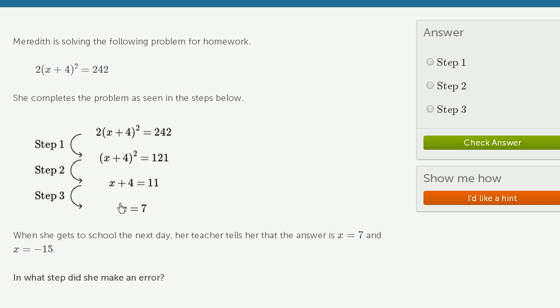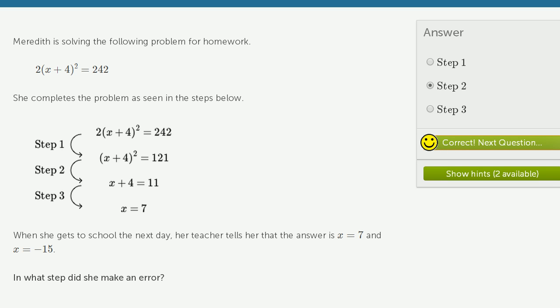And so that's why she missed out on one of the solutions right over here. So she messed up in step 2. She should have taken the positive and negative square root. So we got that right.